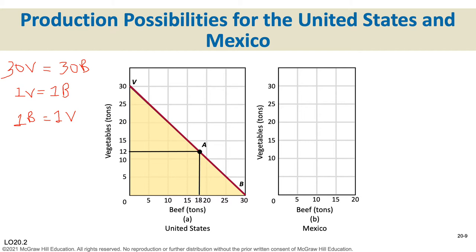Now Mexico's production possibilities curve: if they don't make any beef, they can make 20 tons of vegetables; if no vegetables, they can make 10 tons of beef. Their current production spot is four tons of vegetables and eight tons of beef. To find the opportunity cost of one ton of vegetables, divide both sides by 20: one ton of vegetables equals one-half ton of beef. So in Mexico, producing a ton of vegetables costs only half a ton of beef.